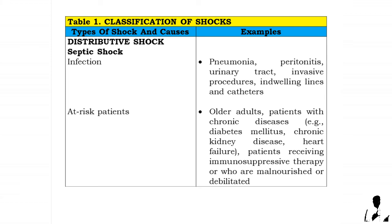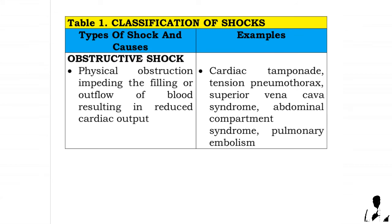Septic shock causes — infection: examples include pneumonia, peritonitis, urinary tract infections, invasive procedures, indwelling lines and catheters. At-risk patients include older adults, patients with chronic diseases such as diabetes mellitus, chronic kidney disease, heart failure, and patients receiving immunosuppressive therapy or who are malnourished or debilitated.